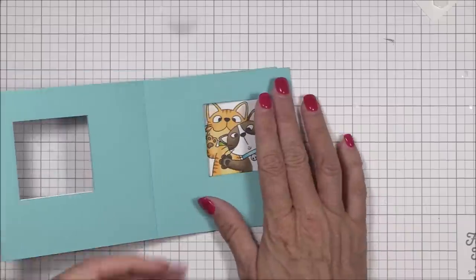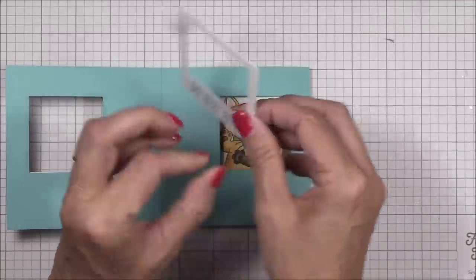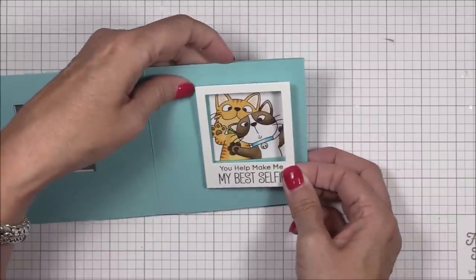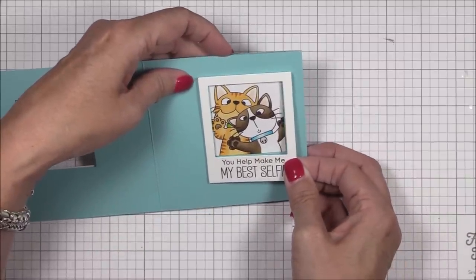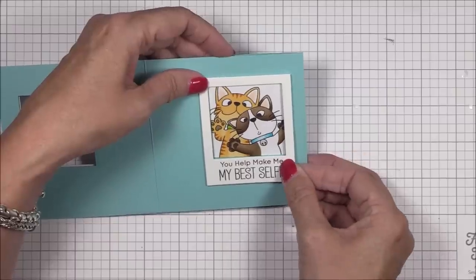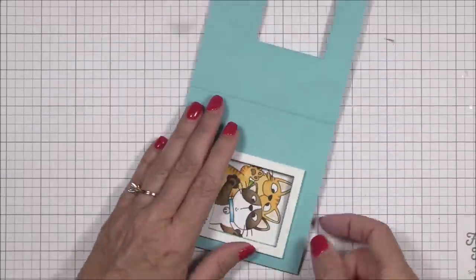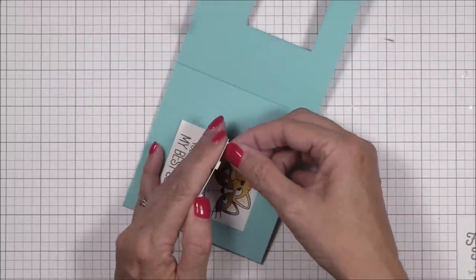Now that that's in place, we can do the exact same thing with the inside of the card. Apply foam squares to the back of the other Polaroid, remove the release paper from all but the top foam squares, position and align the frame, and stick it to the inside of the card. Then you can remove those extra release papers after you've made sure that it's in place.